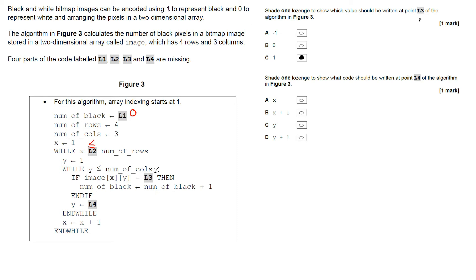So it pays to just read the text in the question again, just so you know exactly what you're looking for. Shade one lozenge, just put one there just so that I know. Shade one lozenge to show what code should be written at L4 of the algorithm this time.